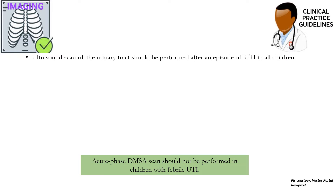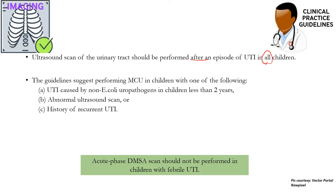Ultrasound scan of the urinary tract should be performed after an episode of urinary tract infection in all children. Earlier a particular age group was mentioned for this indication, but now the guidelines state that ultrasound scan should be done after an episode of UTI in all children. MCU is suggested in children with one of the following: UTI caused by non-E. coli uropathogens in children less than 2 years, abnormal ultrasound scan, or a history of recurrent UTI.